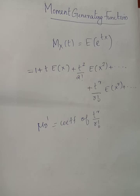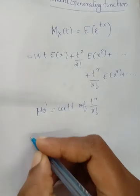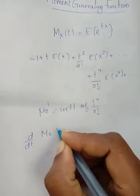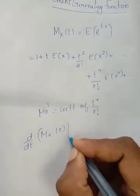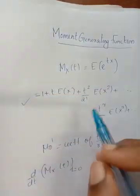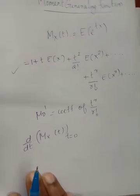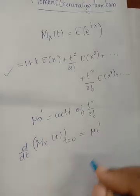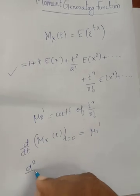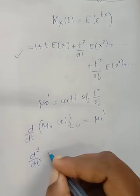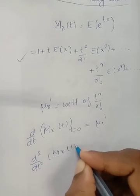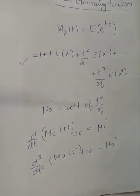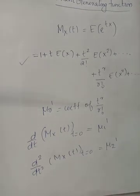We can also calculate the raw moments by taking the r-th derivative of M_X(t) with respect to t, then setting t equal to 0. The first derivative of M_X(t) evaluated at t equals 0 gives mu 1-prime. The second derivative of M_X(t) evaluated at t equals 0 gives mu 2-prime.